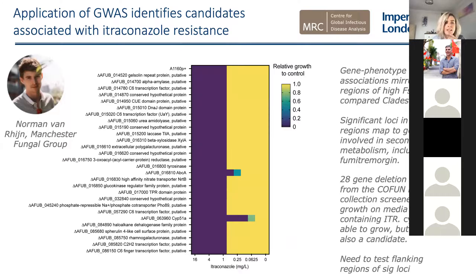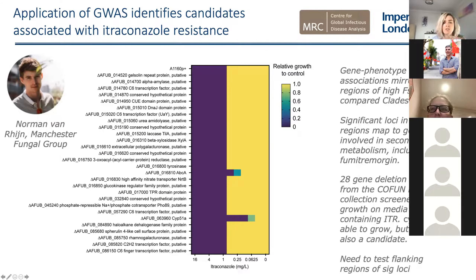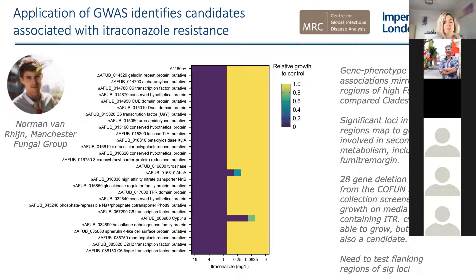We got Norman van Rijn to do a quick-and-dirty analysis: he took 28 gene deletion mutants from the co-fun knockout collection and screened them for growth on media containing itraconazole. CYP51A did not grow as expected, and ABCA also showed no growth — there's a bit of literature on that. We need to test the flanking regions around these loci because there's clearly some linkage going on. This covered only 28 loci out of over 2,000, and knocks out whole genes rather than specific loci — it's a sanity check rather than a definitive analysis.